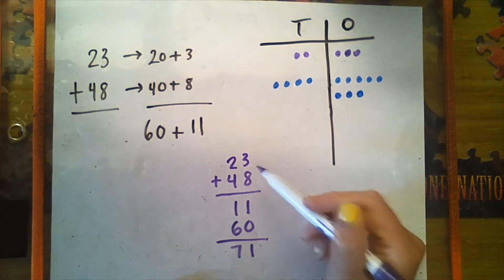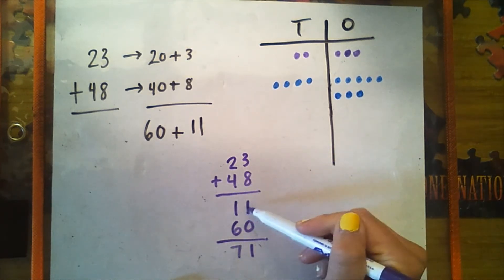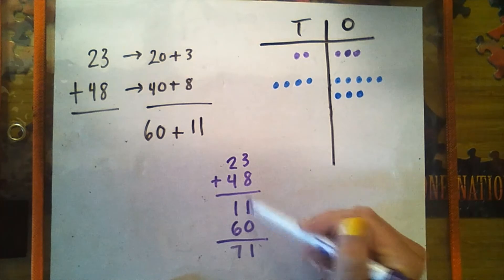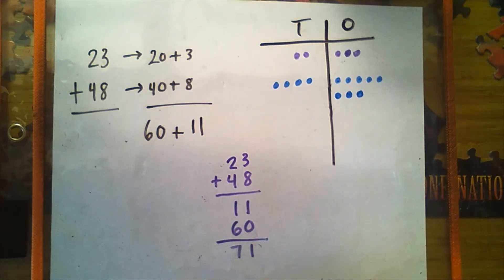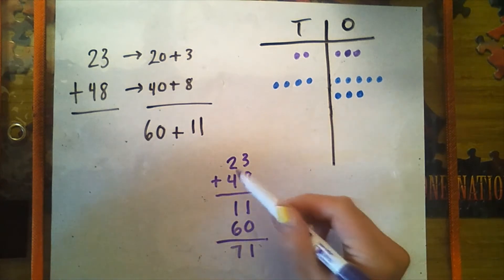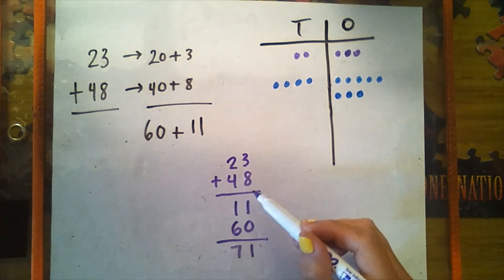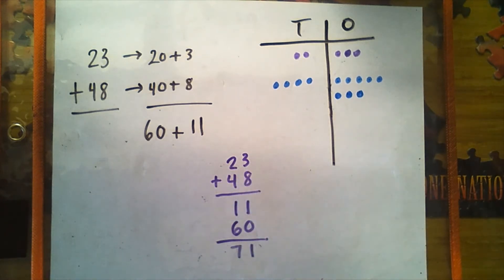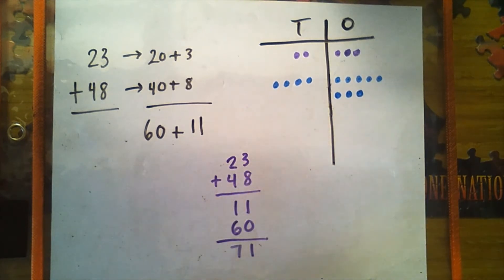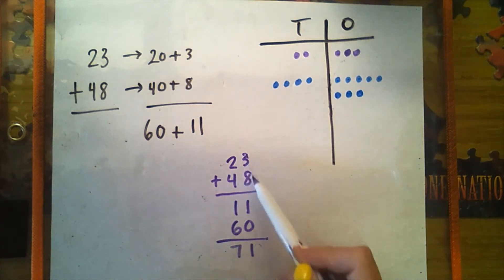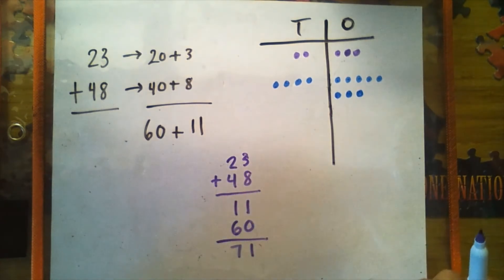We added the 1s first and then we added the 10s. Would we get the same answer if we added the 10s first and then the 1s? Yes, we would, because the number of 10s and 1s would still be the same. We would still get 11 and 60, because we're adding the same parts.